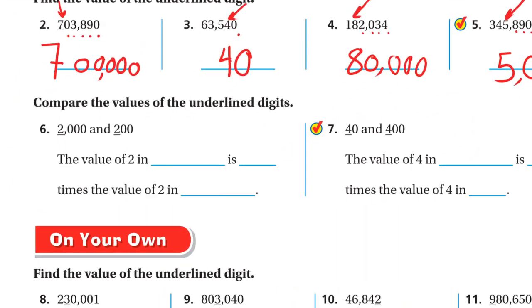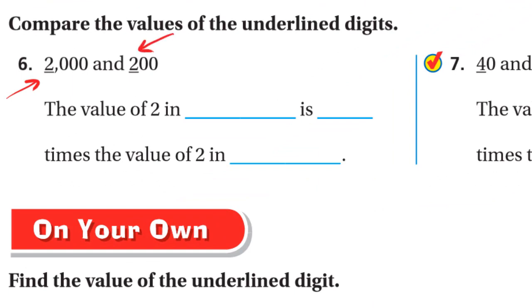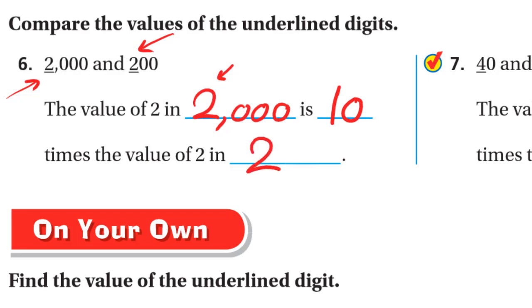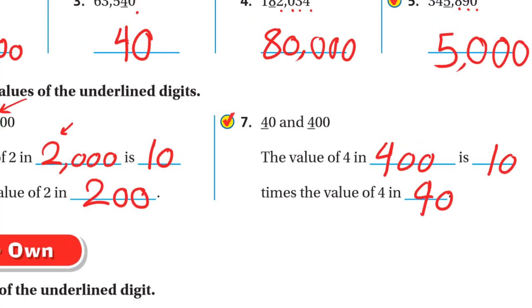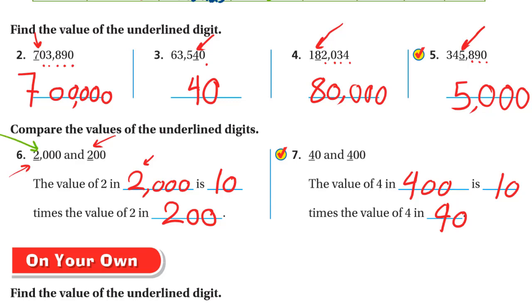Compare the values of the underlined digits. The 2 in the two-thousands: the value of 2 in 2,000 is ten times the value of 2 in 200. For 40 and 400: the value of 4 in 400 is ten times the value of 4 in 40. In general, thousands is ten times hundreds, and hundreds is ten times tens.